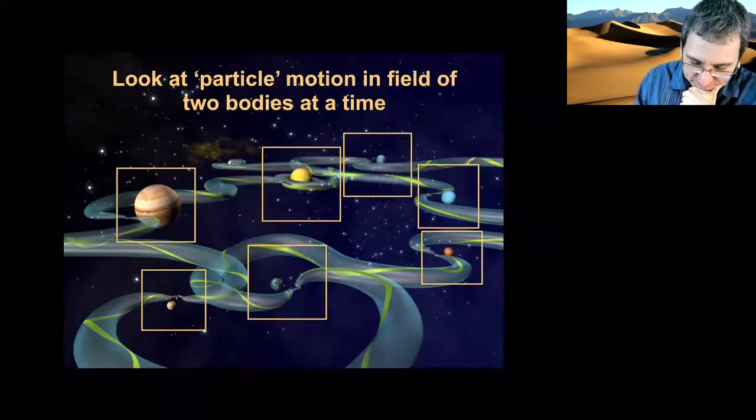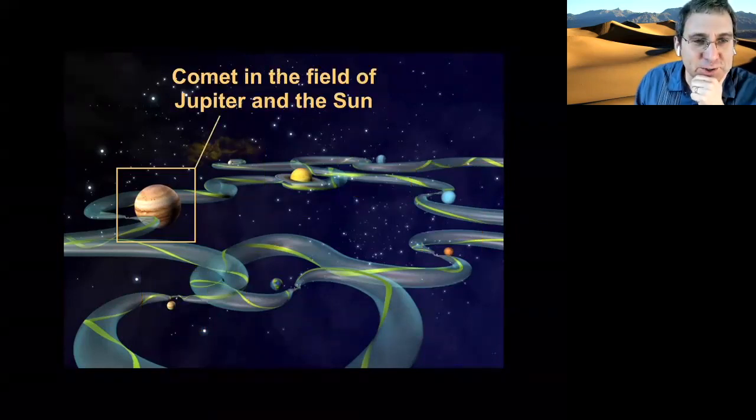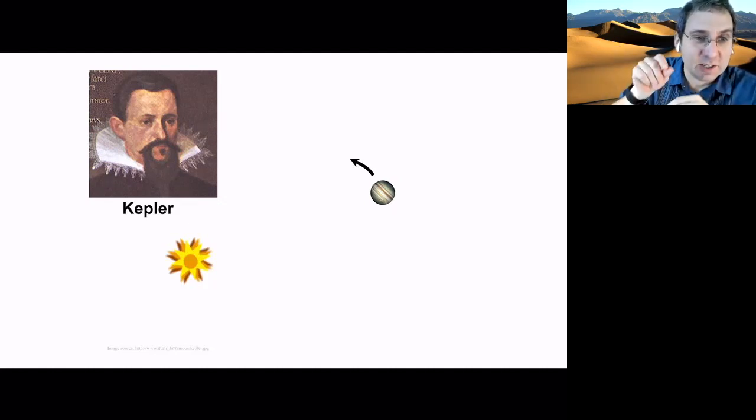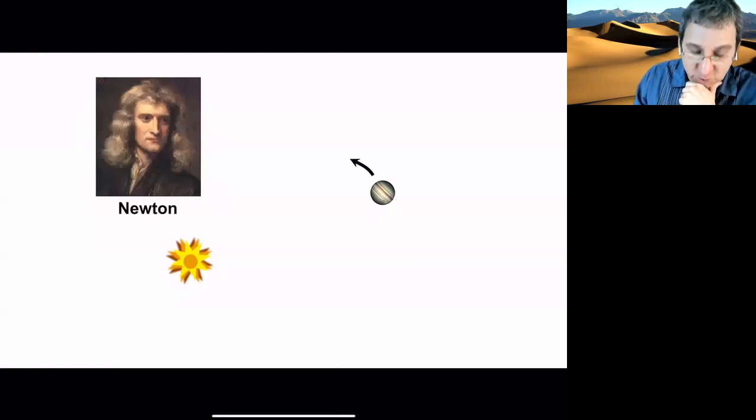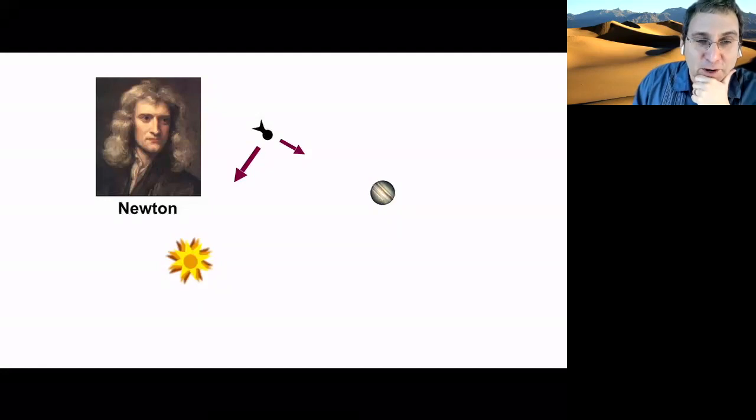So what makes a comet move on these strange paths? Let's look at the particle motion in a field of two bodies at a time. How about a comet in the field of the sun and Jupiter? And this kind of is part of the history of nonlinear dynamics and chaos. So Kepler had his laws about how two bodies orbit their common center of mass. And then Newton basically invented calculus, the field of dynamics in terms of his laws of motion. And he was able to solve the two-body problem. He could formulate the three-body problem. And the three-body problem is very important to the history of dynamics.